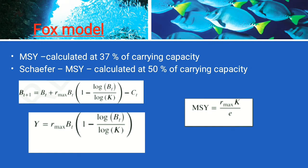The Fox model is similar to the Schaefer model but there is a key difference. In the Schaefer model, Maximum Sustainable Yield can be calculated at 50% of carrying capacity. Whereas in the Fox model, Maximum Sustainable Yield can be calculated at 37% of carrying capacity — these points are important for exam purposes. The mathematical difference between the two equations is that in the Fox model we take the logarithm, whereas in the Schaefer model we do not. So the use of log is the basic difference, and from both we can calculate Maximum Sustainable Yield.